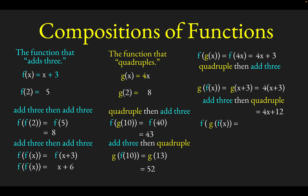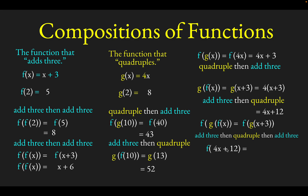As a final example, we could do 3 of these operations in a row: f of g of f of x. Working from the inside out, we apply f first, then g, then f again — meaning we add 3, then quadruple, then add 3 again. Adding 3 to x gives x plus 3. Quadrupling that gives 4x plus 12. Finally, adding 3 to that gives 4x plus 15.